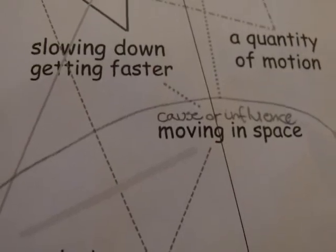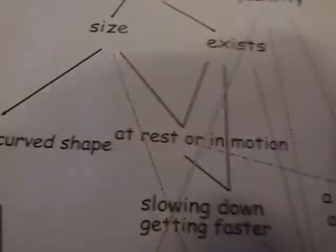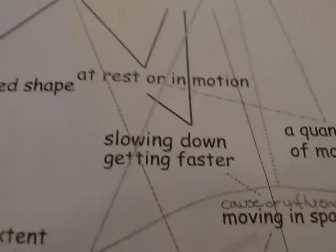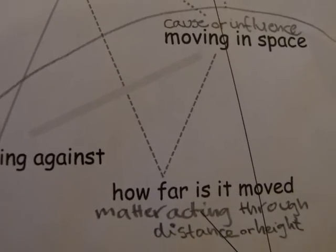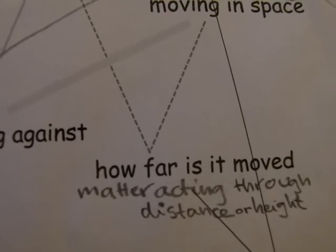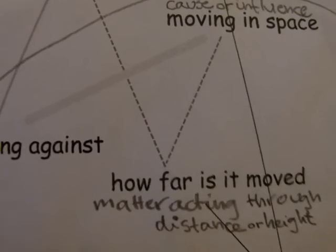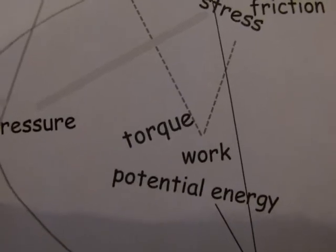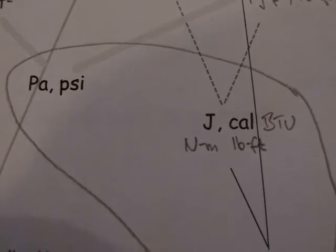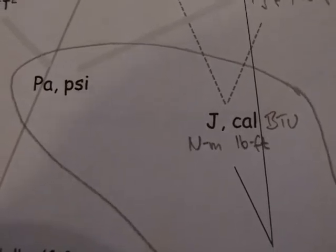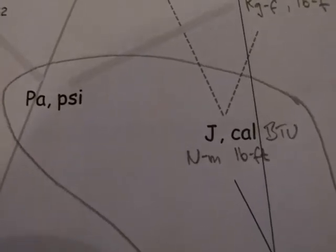Matter is moving, and this movement takes place in 3D space, going on for a certain distance. How far that motion is carried — through what distance or height matter is acting — is called in physics torque, or work, or potential energy. These are measured in joules, calories, BTUs, newton-meters, or pound-feet — usually people say foot-pounds, but it's actually pounds-feet — and pound-inches.